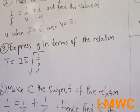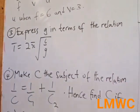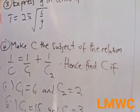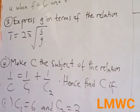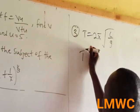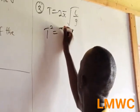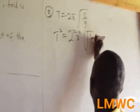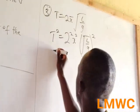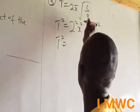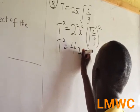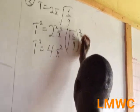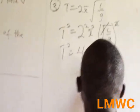Question 3: Express j in terms of the relation t = 2π√(l/j). For this question, you square both sides of the equation. So if this becomes t squared, it is equal to (2π)² times l/j. 2 squared is 4π². So this will cancel, and it becomes 4π² times l/j.